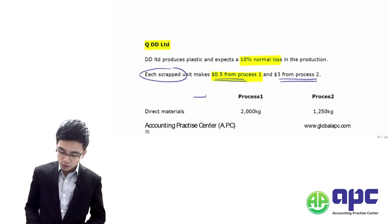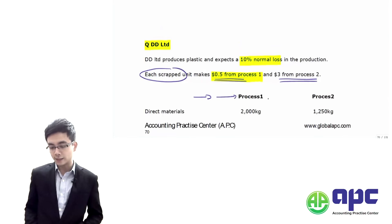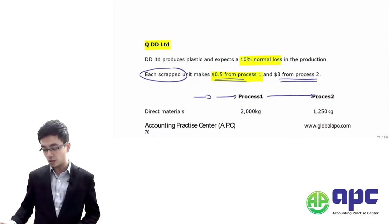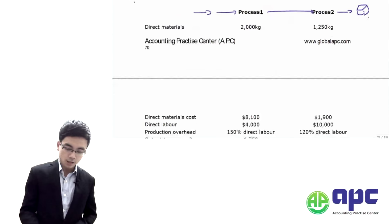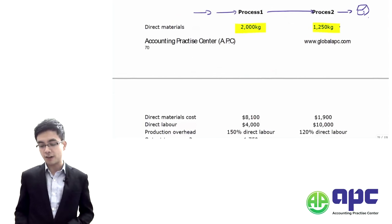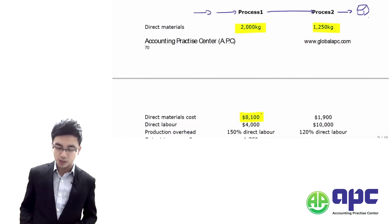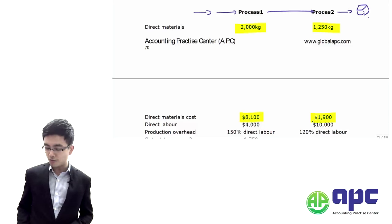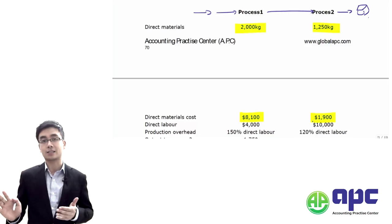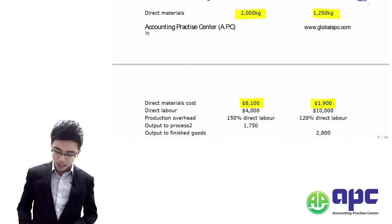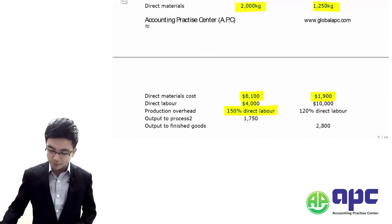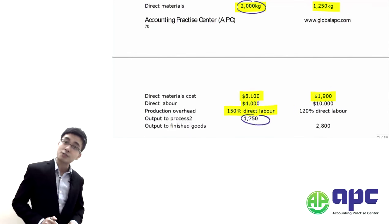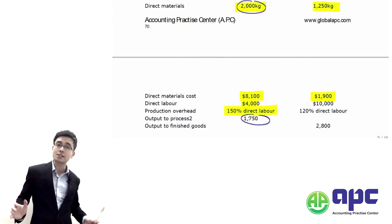Raw materials are input into process one, then go through to process two to give the output. In process one, we input 2,000 kilos of direct materials costing $8,100. In process two, 1,250 kilos costing $1,900. The output from process one is 1,750 kilos — we input 2,000 but only get 1,750 out.